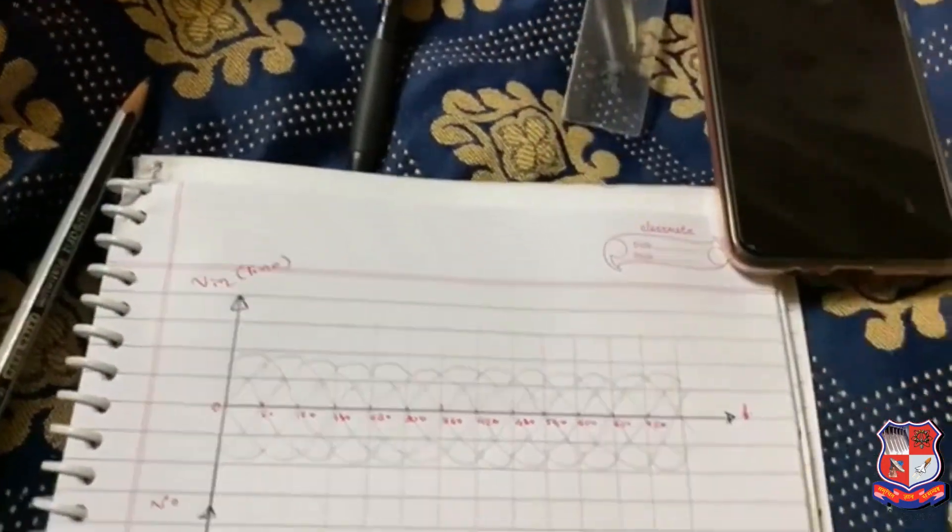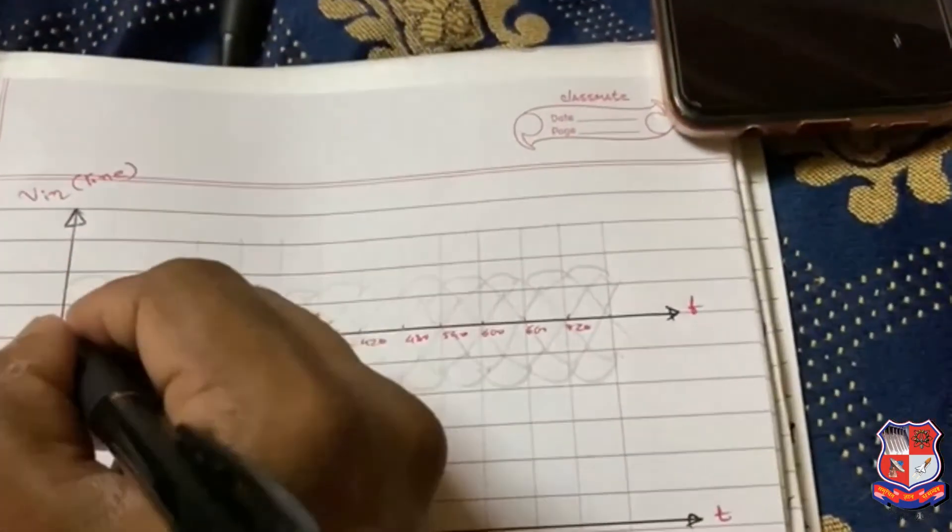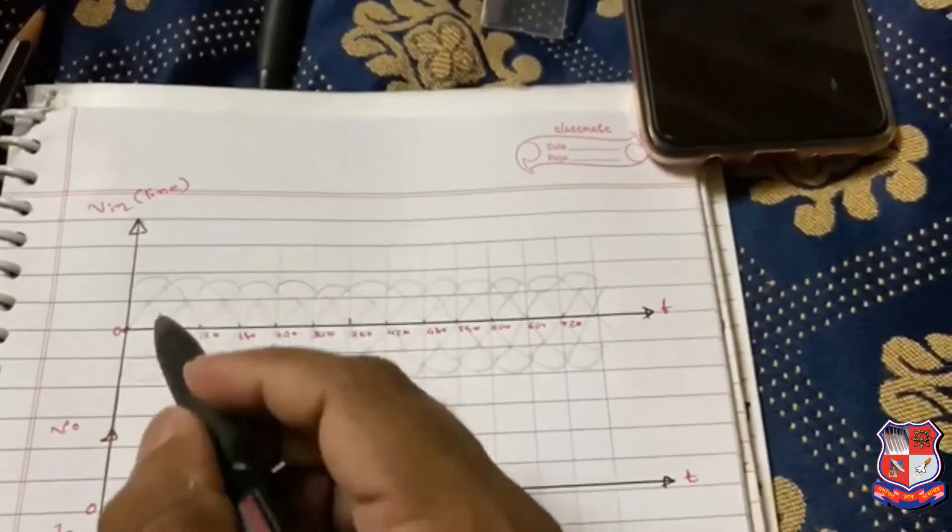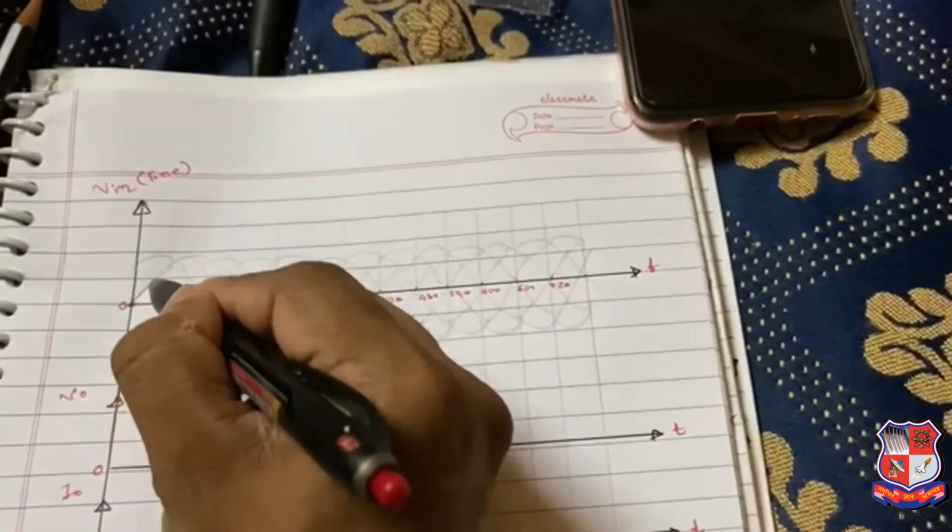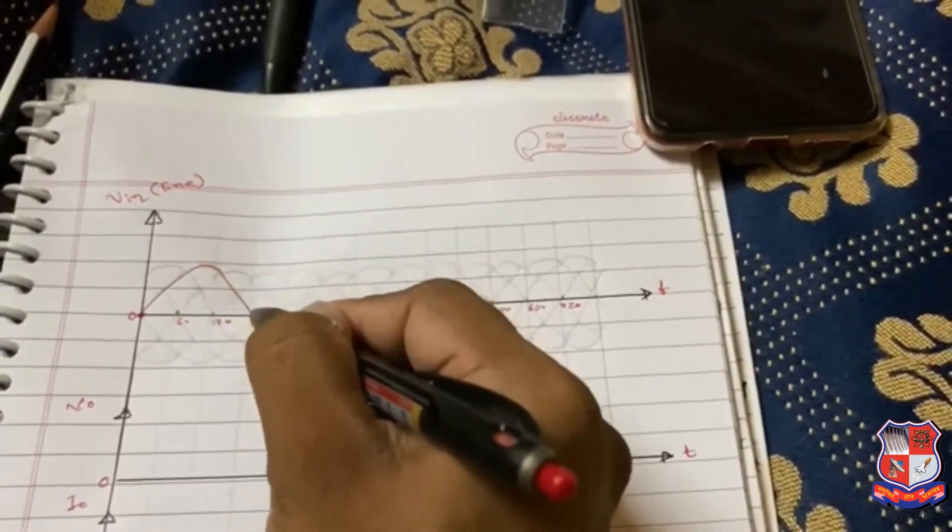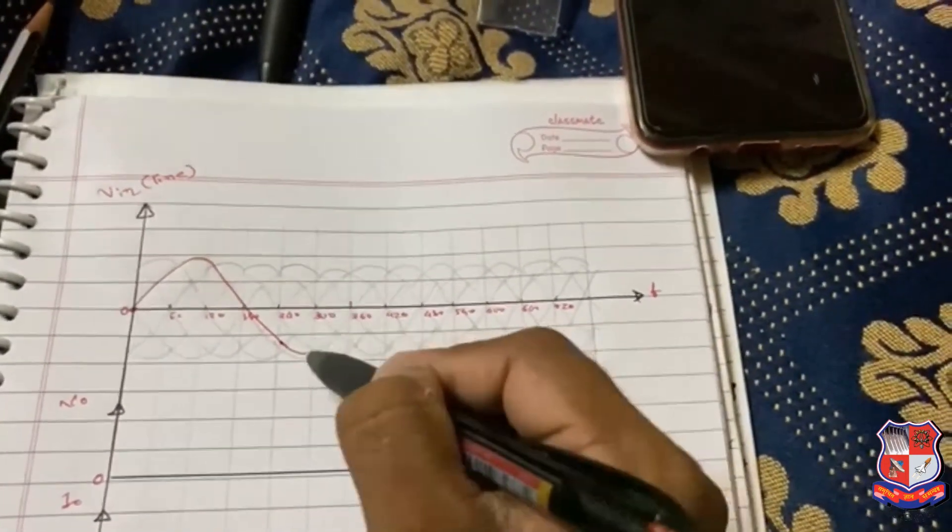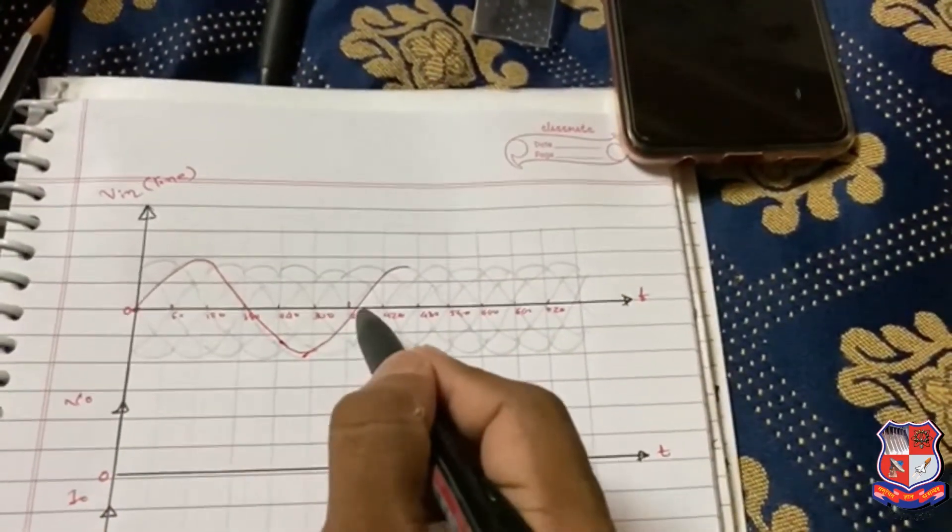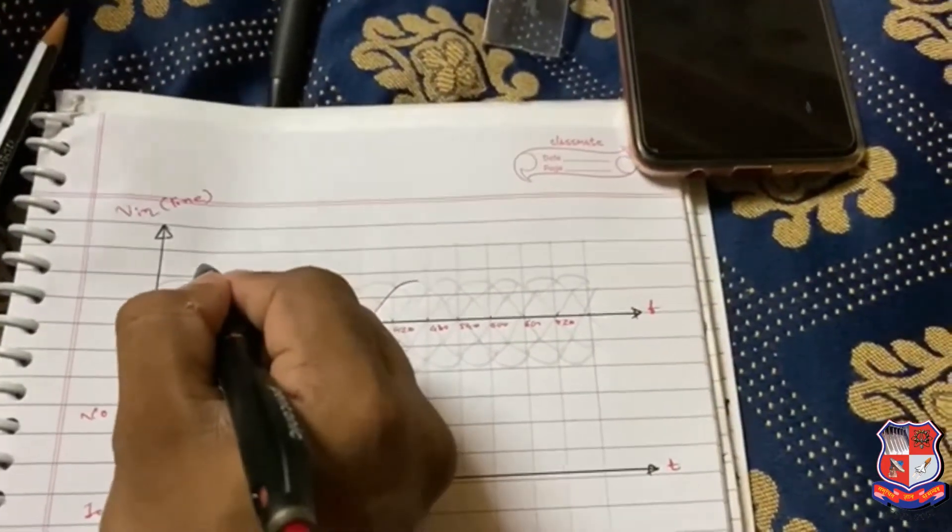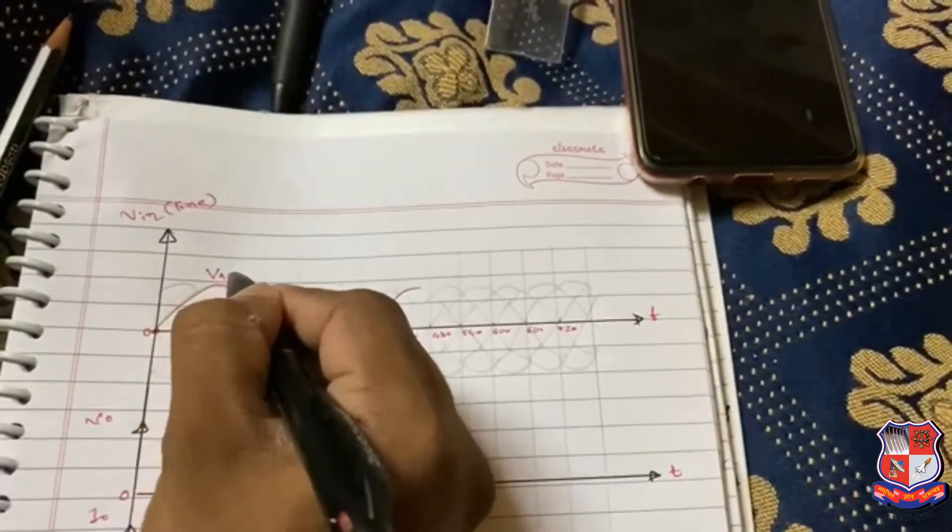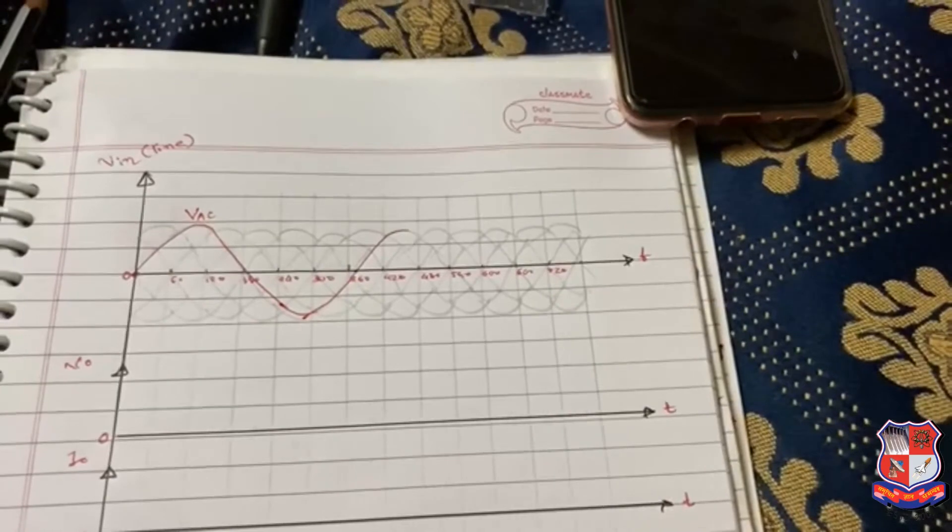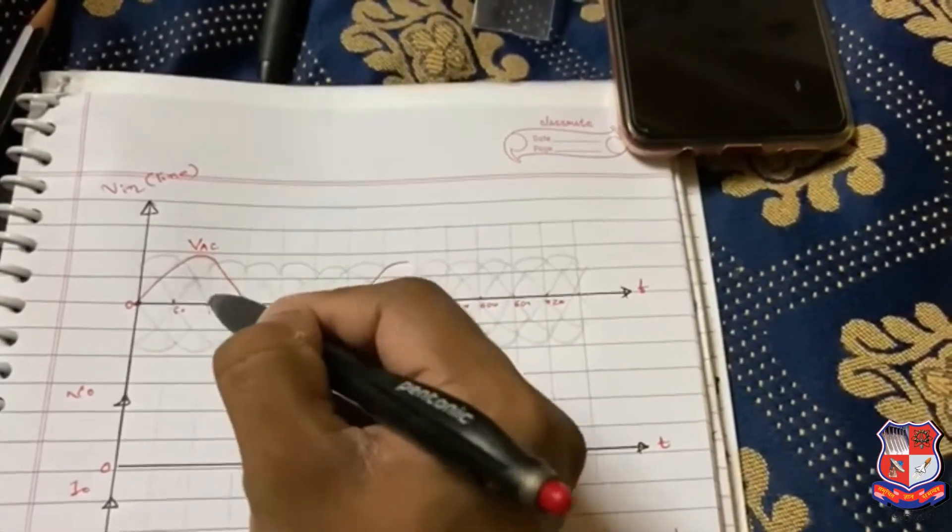After connecting this, connect all the tips in semi-circular form. Now you can see that from zero, this is our first voltage 0 to 360 and it is called VAC.